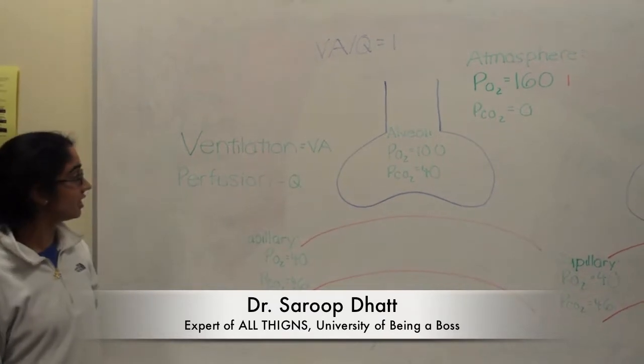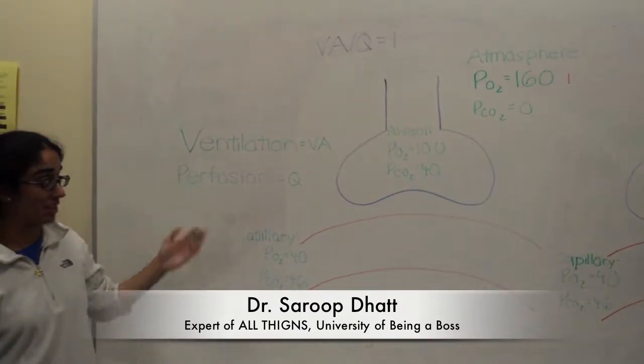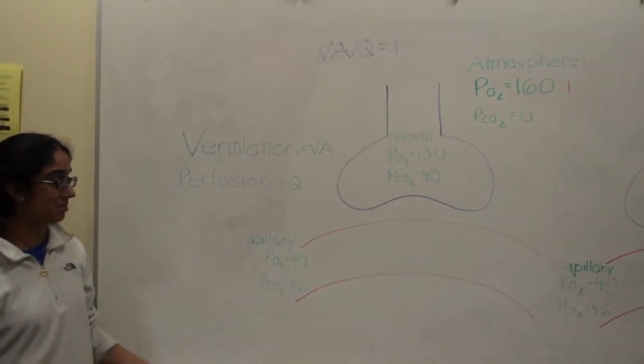For the ventilation-perfusion ratio, it includes ventilation, which is symbolized as VA, and perfusion, which is symbolized as Q.